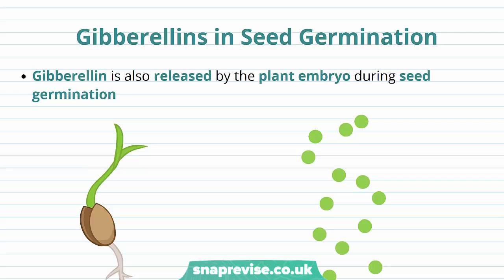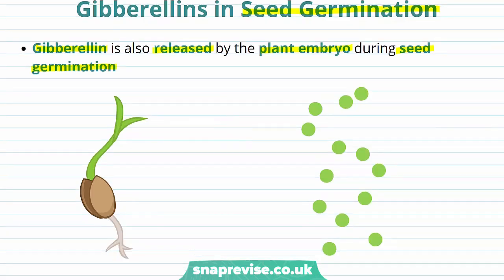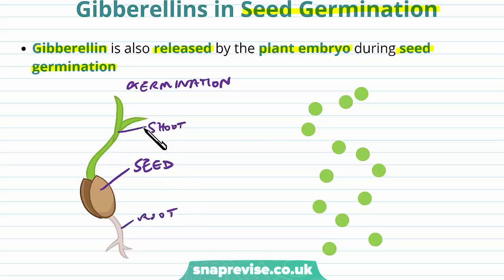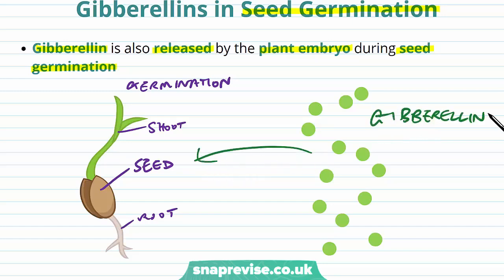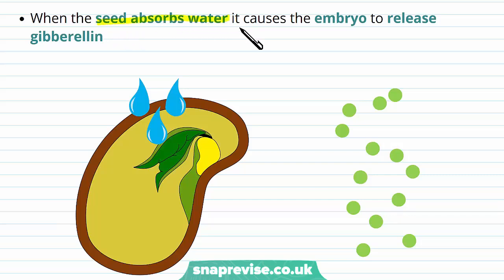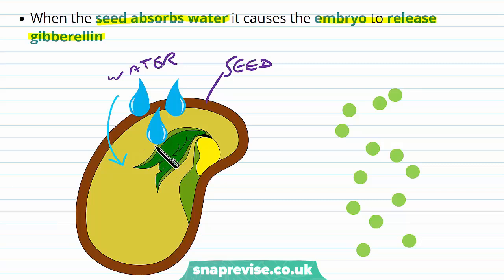Gibberellins are also very important in seed germination. The gibberellin hormones are released by the plant embryo during seed germination. In seed germination, the seed begins growing its own shoots and roots so they can function to grow the plant into a fully sized adult. The process of germination can be started by the release of gibberellins. When the seed starts to absorb water in a favourable environment, it causes the embryo to release gibberellins from particular tissues.